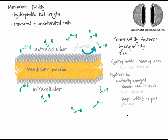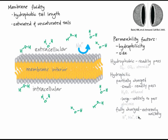The likelihood that a partially charged molecule passes through a membrane decreases if the molecule is large. For example, glucose, which is three times larger than ethanol, is very unlikely to pass through the membrane. Hydrophilic molecules with full charges forgo stronger interactions when they leave a watery environment to enter the membrane interior. So ions such as hydrogen ions, sodium ions, and chloride ions are extremely unlikely to pass through a membrane, no matter how small they are. This is so unlikely that we often refer to cell membranes as impermeable to ions.